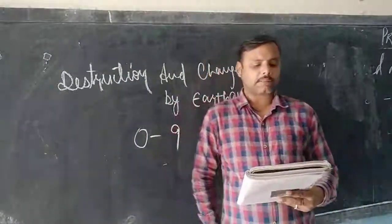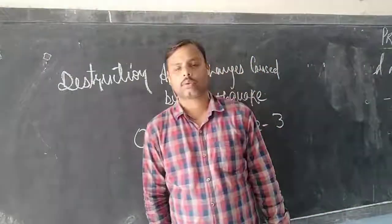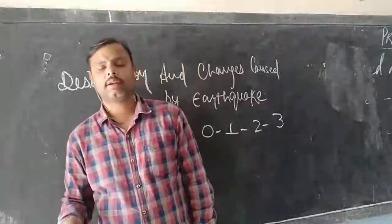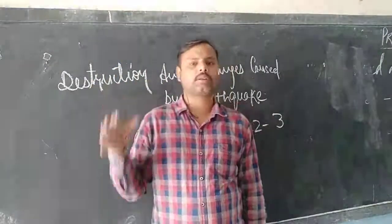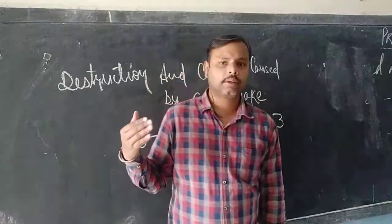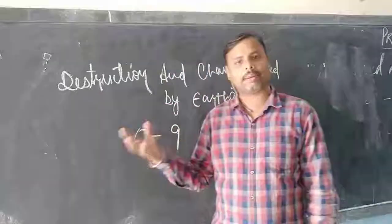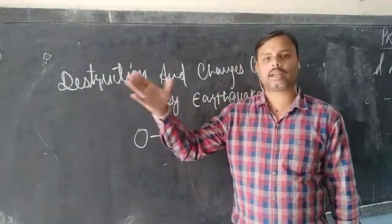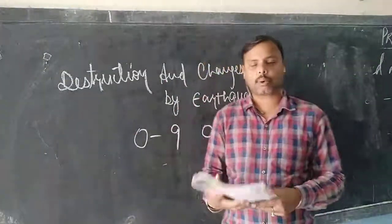Fifth, sometimes the earthquake causes sudden and permanent change in river courses. Rivers change their ways and find different paths to flow. This is because of the movement of the earth's core crust beneath the earth — that changes, and as a result, the river system changes.